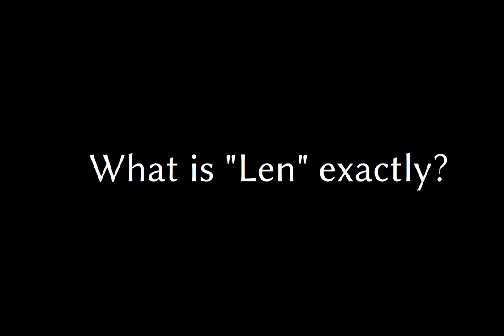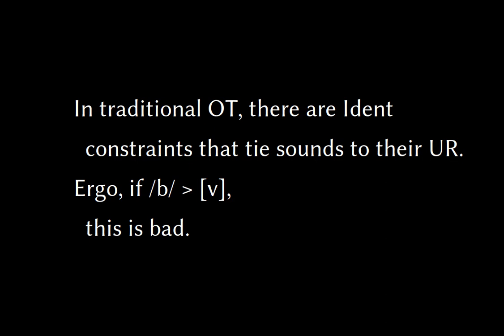What exactly is 'len'? I've said there's a lenition process that happens and called it a constraint — that's actually terrible to do in Optimality Theory, even though people do it. Traditional OT had things called ident constraints. An ident constraint basically says: don't change phonemes. So if it's underlyingly a B, you want it to be a B. Or more specifically, don't change voice, or don't change place of articulation. That's generally what an ident constraint is — they tie how you pronounce things to the underlying form.